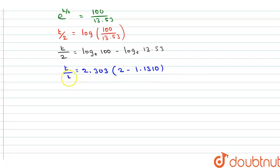we get t by 2 is equal to 2.303 into (2 minus 1.1310). So, to get a value of t, we will multiply, we will bring this to this side.